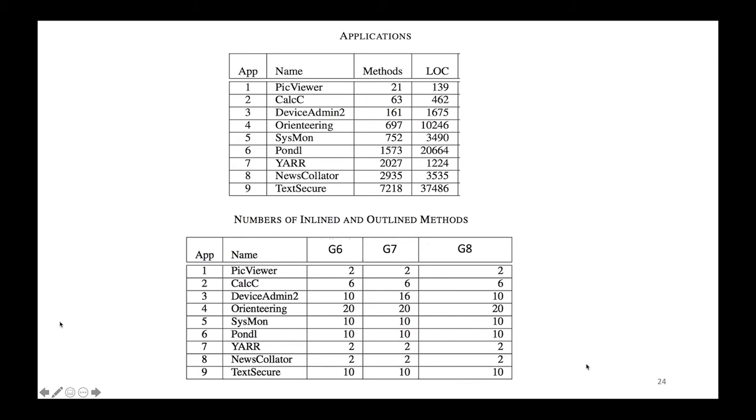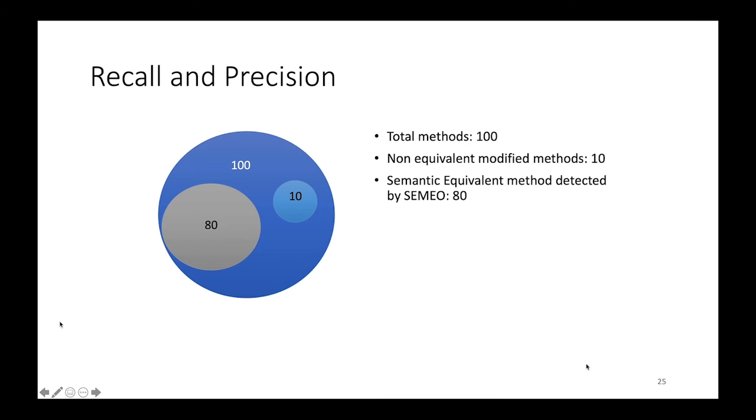In terms of the number of inline and outlining method for these apps, we list here. For example, if we look at text secure, we end up going into the code and create 10 additional methods that have been inline. We also did 10 additional methods that have been outlined. And then for G8, we just take some of those and combine them, both inline and outlining. In terms of metrics, I need to define what we mean here by recall and precision.